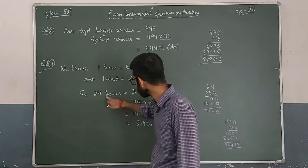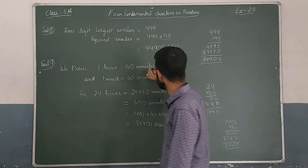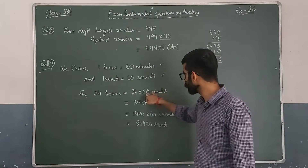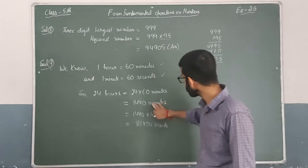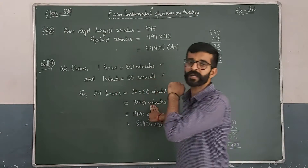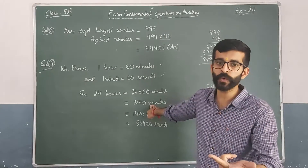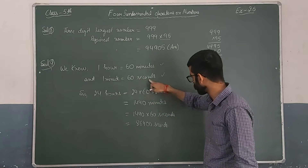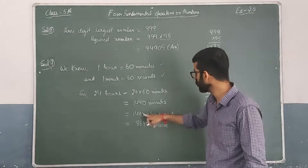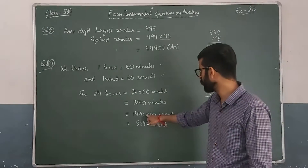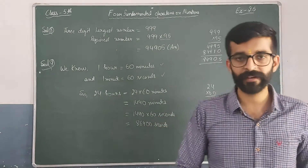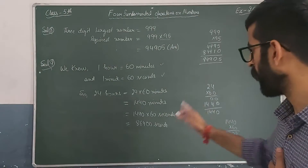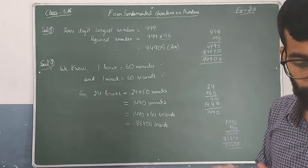24 hours means 60 minutes, and 1 minute is equal to 60 seconds. So to convert to seconds, we multiply by 60. The result is 86,400 seconds in 24 hours.